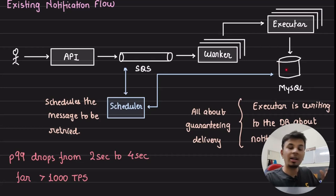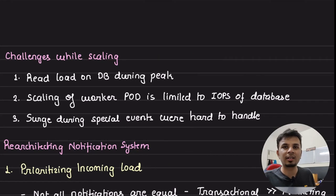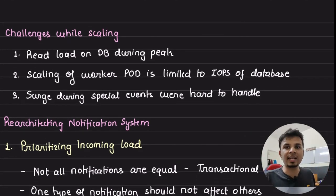One very interesting design decision that we saw is about persisting the outbound communication in a database because a guaranteed delivery is essential. What was the problem with this architecture? The problem was that their P99 drops from two seconds to four seconds for more than 1000 transactions per second. As soon as their systems hit the limit of 1000 transactions per second, the P99 latencies drop from two seconds to four seconds, which is not acceptable for them. They have very high standards. This is where they thought of let's rebuild.